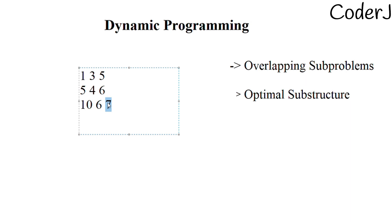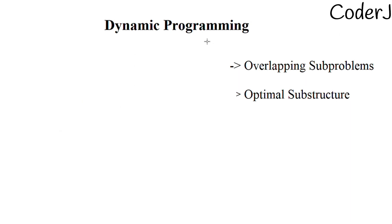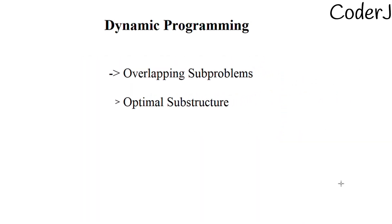So these are the essential conditions for dynamic programming: overlapping subproblems and optimal substructure. I hope that's clear. In the next video, we'll discuss the two ways we implement dynamic programming: tabulation and memoization. That's enough for today — thank you!